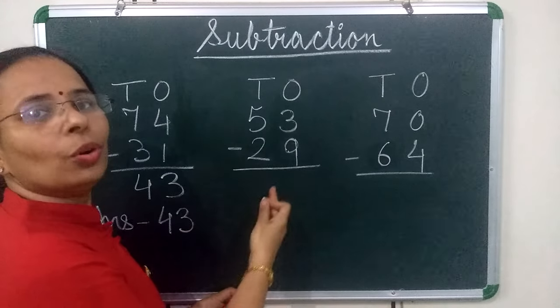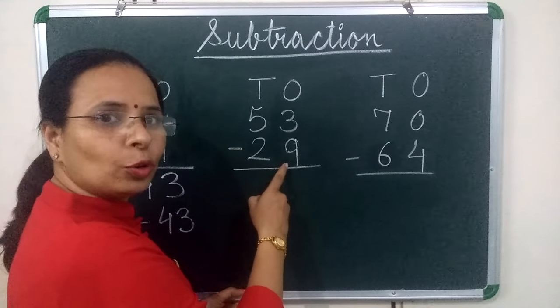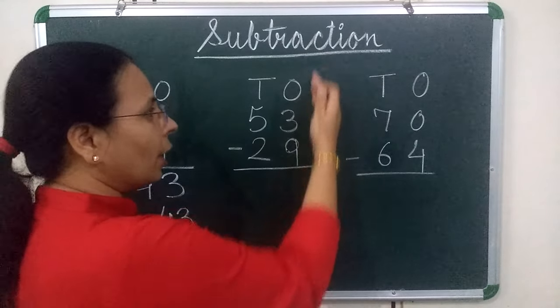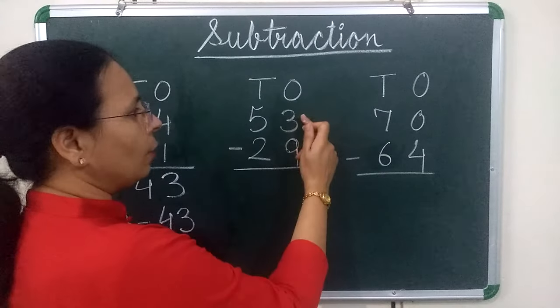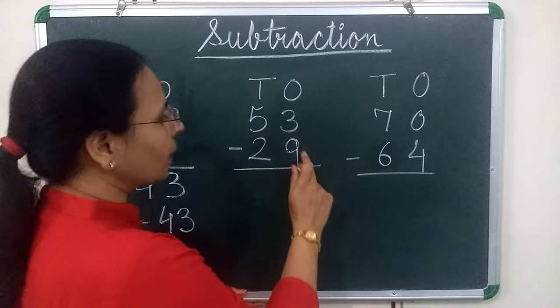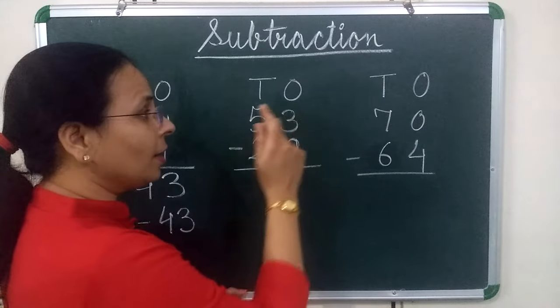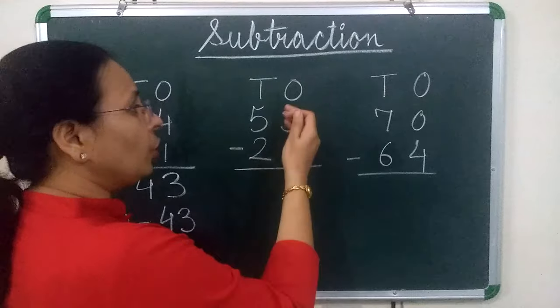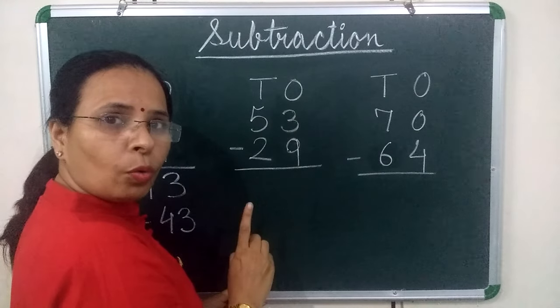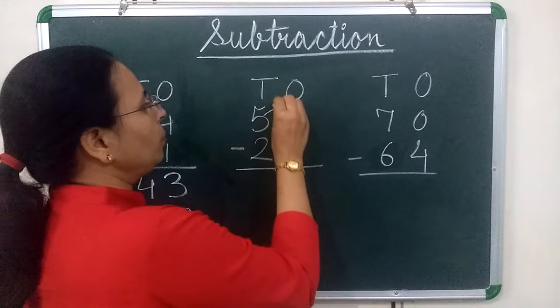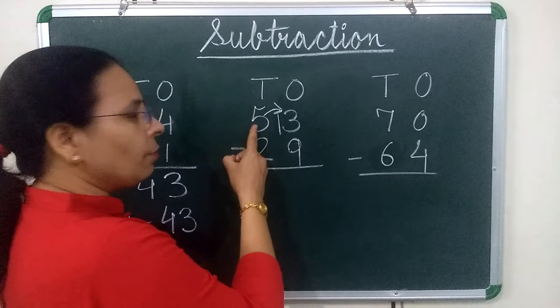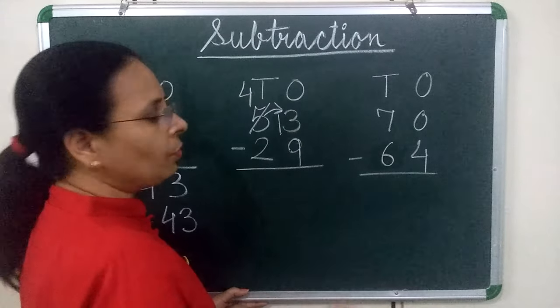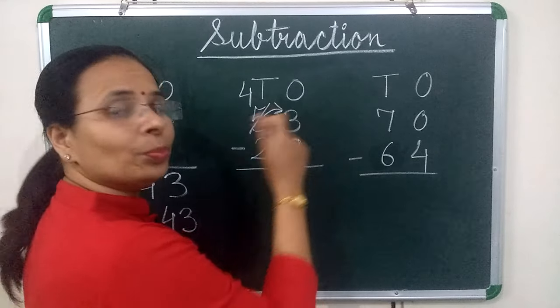Now we will move on to next question. Here we have to subtract 29 from 53. See, again we will start from 1's place and 1's place first number is 3 and second number is 9. And 3 is greater than 9? No, it is less than 9. So 3 will borrow 1 from 5 and it become 13. 5 has given 1, so 5 becomes 4. Now we will subtract 9 from 13.